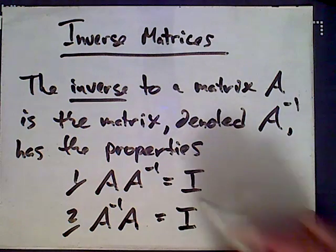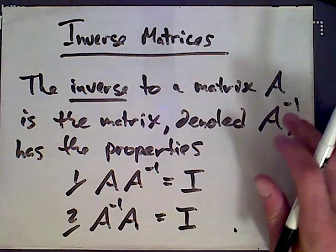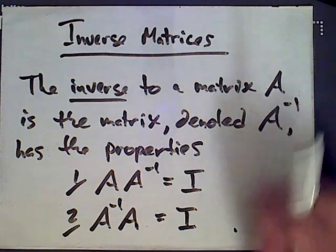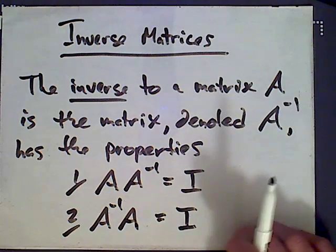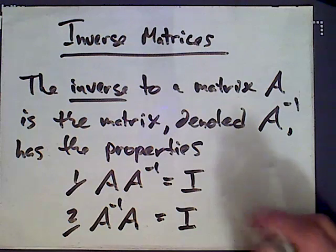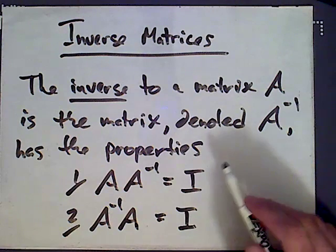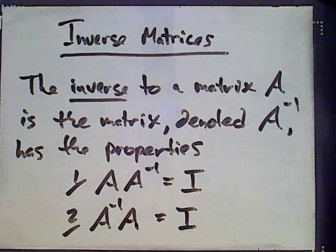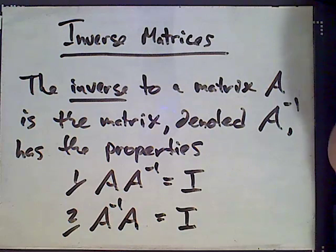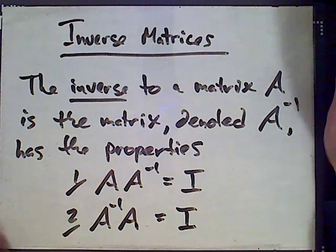Note that it's important to have these two properties here, not just one, because in general matrix multiplication is not what's called commutative, meaning that the order you multiply matrices in general matters. So for two matrices A and B, A times B may be different than B times A, so we need these two properties.